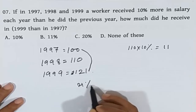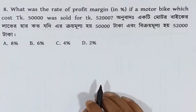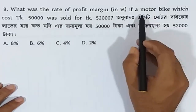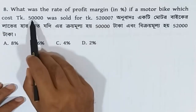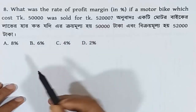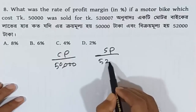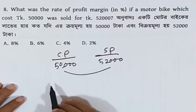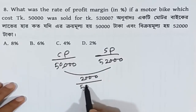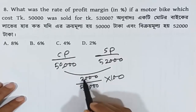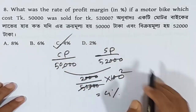So the answer is 21%, option D is correct. Let's go to question 8. What was the rate of profit margin if a motorbike which cost Taka 50,000 was sold for Taka 52,000? The cost price is Taka 50,000 and the selling price is Taka 52,000, so the profit is Taka 2,000. The profit margin is 4%. Option C is correct.